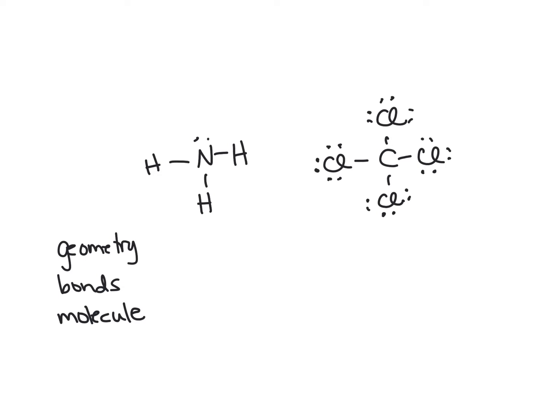The first thing we need to determine for NH3 is how many groups are around the central atom, because that's going to tell us what the geometry is. When I look at NH3 I see one, two, three bonding groups, and then one non-bonding group. So we have four groups around the central atom.